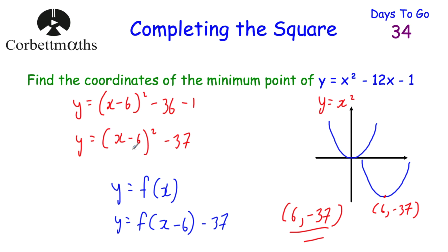To recap: when we have (x − 6)² − 37, the minus 6 inside the bracket moves the graph 6 squares to the right — it's counterintuitive. The minus 37 outside moves it 37 squares down. If it were plus 3 inside, you'd move 3 squares to the left; if plus 14 outside, you'd move it 14 squares up.